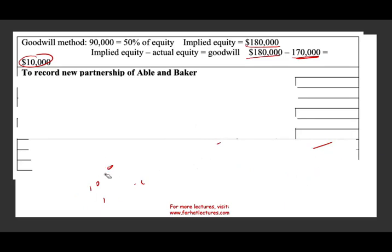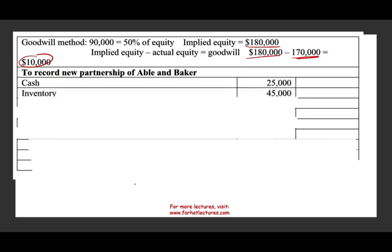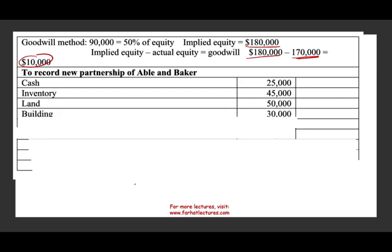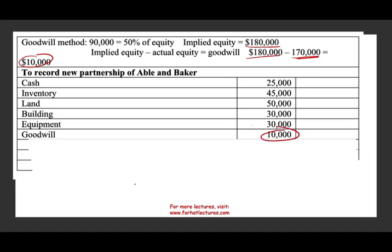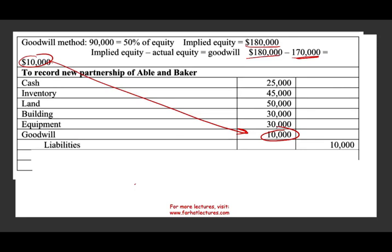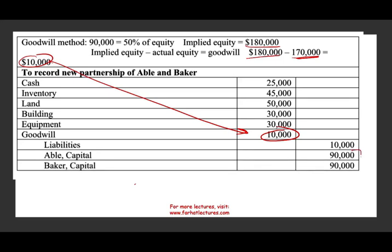Now let's look at the journal entry for the goodwill method. They contributed cash of 25,000, inventory of 45,000, land, building, and equipment totaling 30,000 combined — those are the debits. We also debit goodwill for $10,000. We credit the liability of 10,000 that the partnership absorbs. Abel's capital is 90,000 and Baker's capital is 90,000, because it's a 50-50 partnership and the implied value is 180,000, so each gets 90,000.